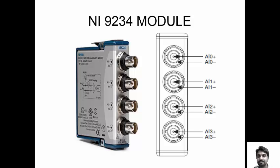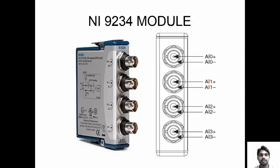Around the shell are the negative signals: AI0 minus, AI1 minus, AI2 minus, and AI3 minus. These are all the negative grounded signals, as shown in the circuit diagram.